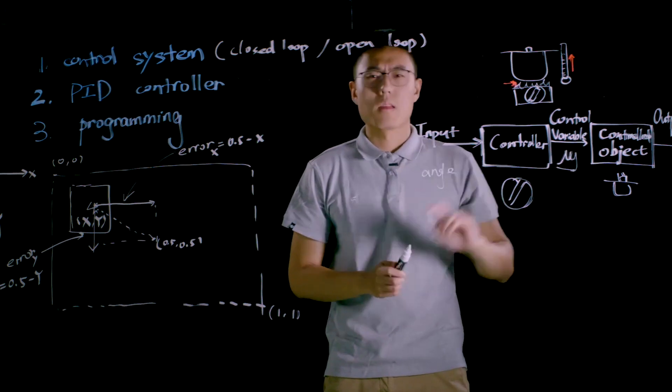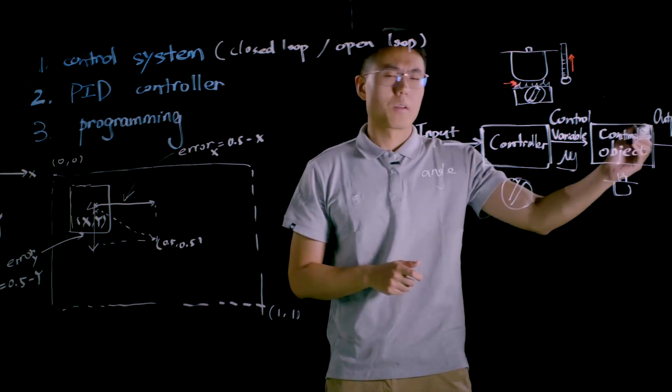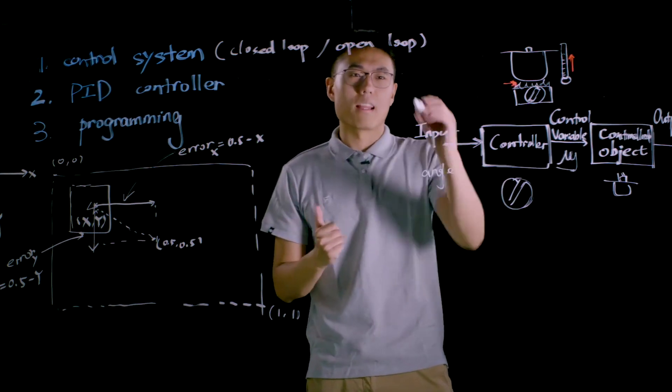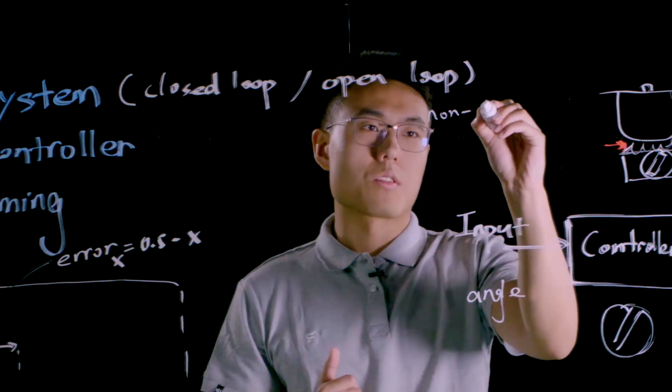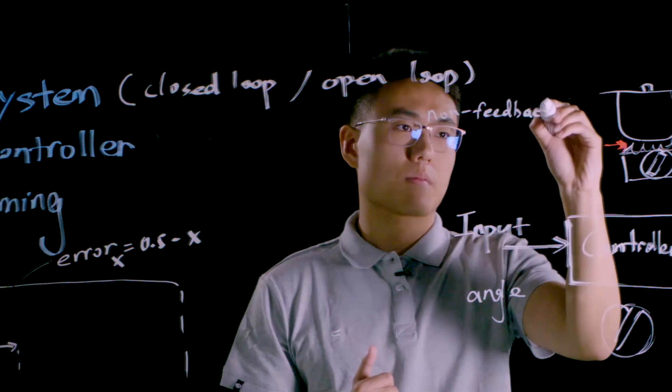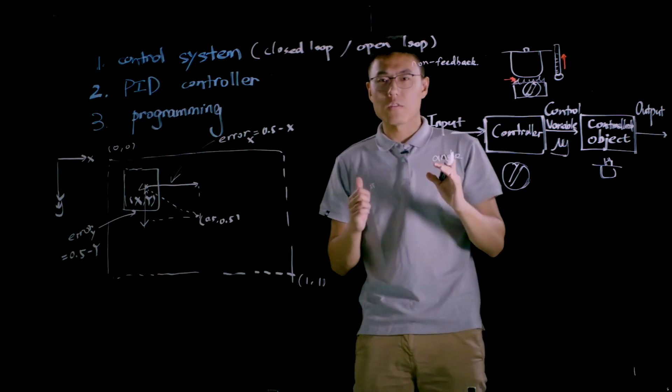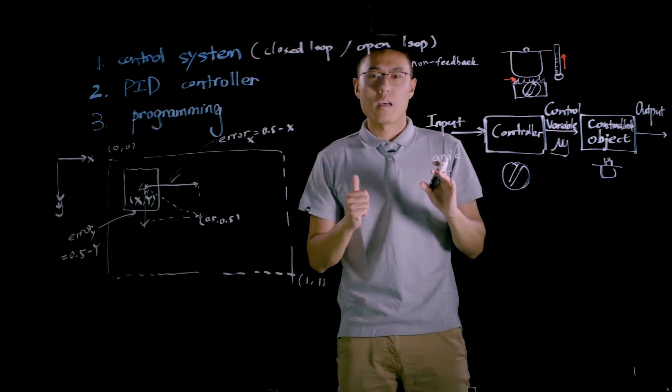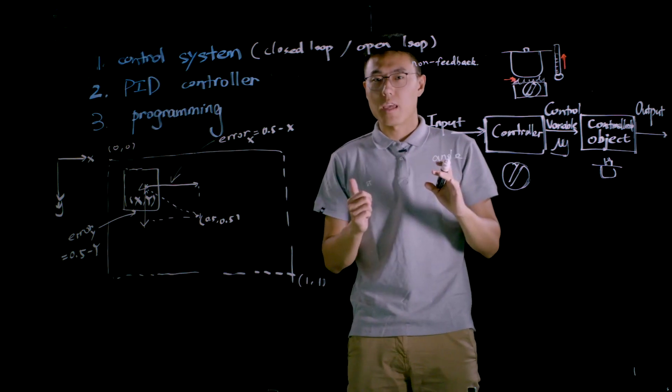In this open loop system, there is no feedback from the output value, so we also call this system a non-feedback control system. The advantage of this open loop control system is it has simple structure and very low cost.